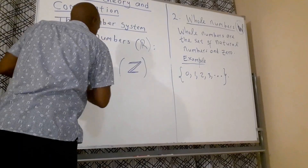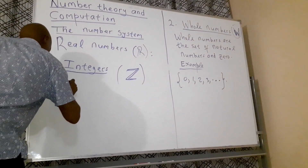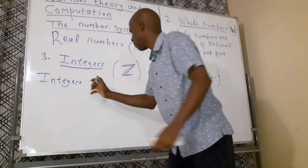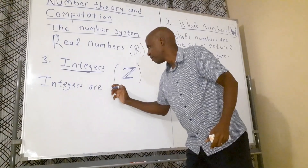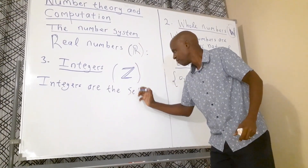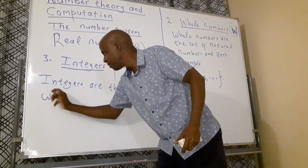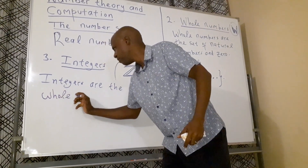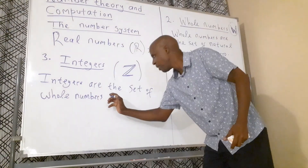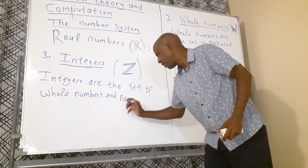So I can say that Integers comprises whole numbers and negative natural numbers.